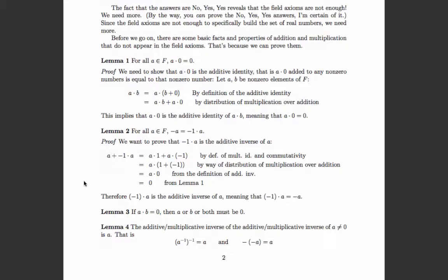Lemma 2: the additive inverse of a is produced by multiplying negative one times a, where negative one is the additive inverse of one. To show this, we need to show that negative one times a, when added to a, is zero. So: a plus negative one times a equals a times (one plus negative one), by factoring. The definition of negative one is that one plus negative one equals zero, so this equals a times zero, which equals zero by Lemma 1. Therefore negative one times a is the additive inverse of a.